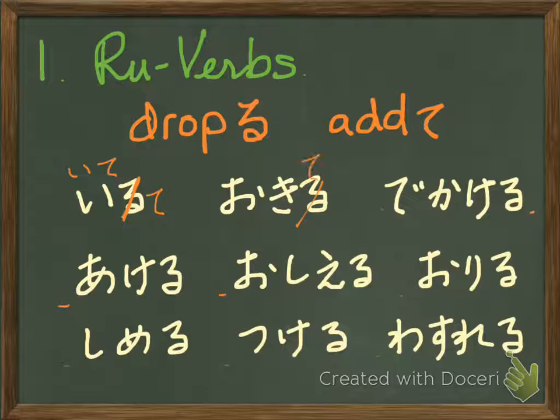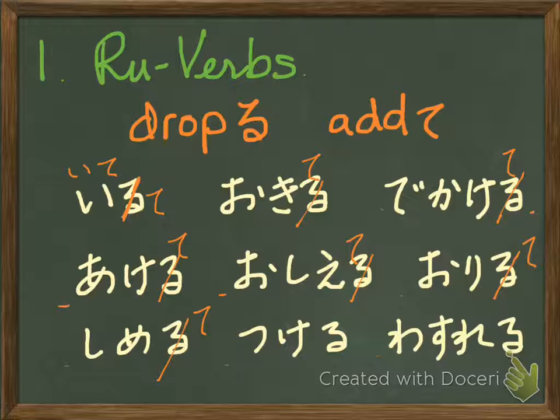Okiru — drop ru and add te: okite. Dekakeru → dekakete. Akeru → akete. Oshieru → oshiete. Oriru → orite. Shimeru → shimete. Tsukeru → tsukete.